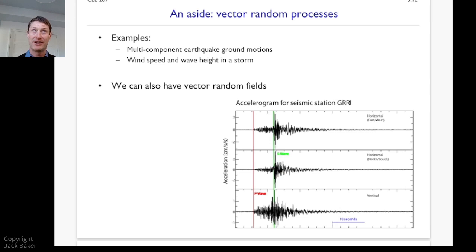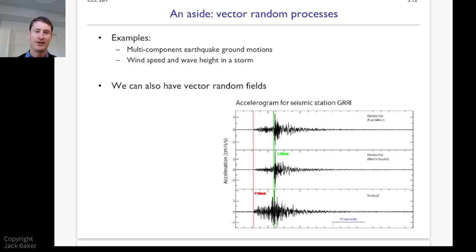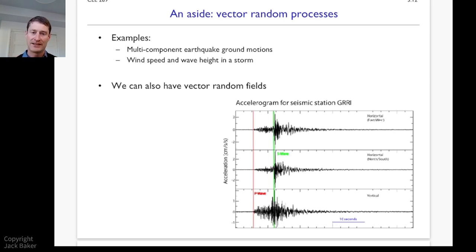You could think about having an x of t which takes three different values at each point in time, reflecting the amplitude of shaking in those three different directions. We can also have these vector random fields — this ground shaking varies as a function of time, but also as a function of space where you record it. Moving in space, the recording would be different, so I could have ground shaking as a function of x and y coordinates as well as time t, taking three values for the three directions of shaking.